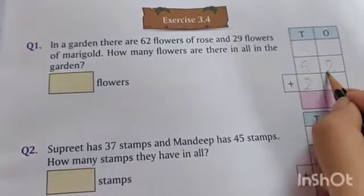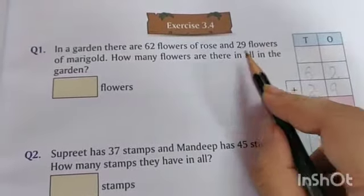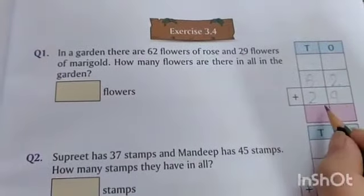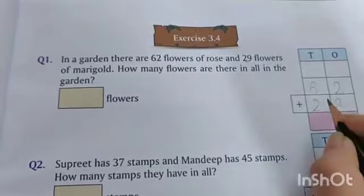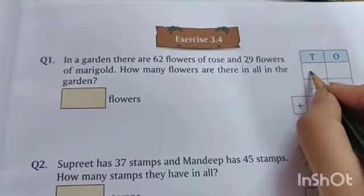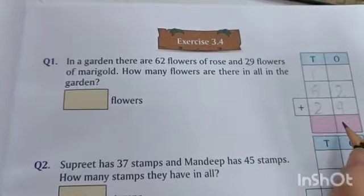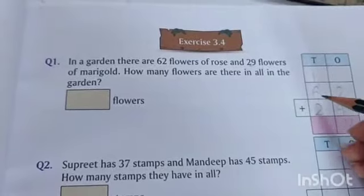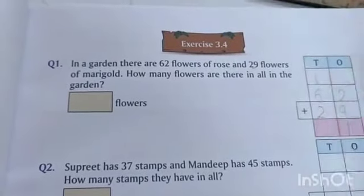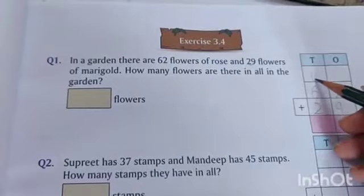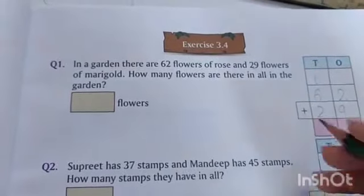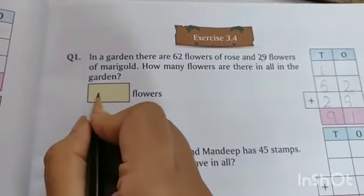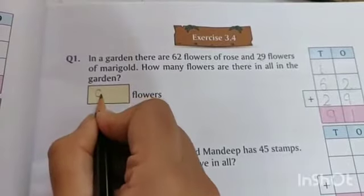First we have to write 62 flowers of rose, and then we have to add 29 flowers to calculate total number of flowers in the garden. So let's add 9 plus 2 is 11. So 1 carry to tens column and 1 we write in the ones column. Now let's add 6, 2, and 1 carry. 6 plus 1 is 7, 7 plus 2 is 9. So there are total 91 flowers in the garden.